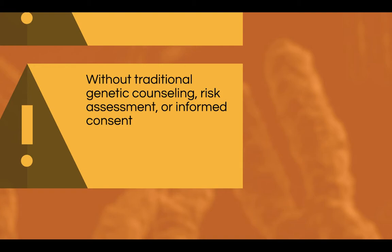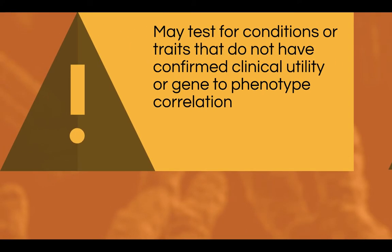DTCGT is often done without traditional genetic counseling, risk assessment, or informed consent to confirm that the consumer fully understands the implications of the possible results. Some DTCGT companies may test for conditions or traits that do not have confirmed clinical utility or have no confirmed gene-to-phenotype correlation. An example is genetic testing done to see what vitamins a person should take.